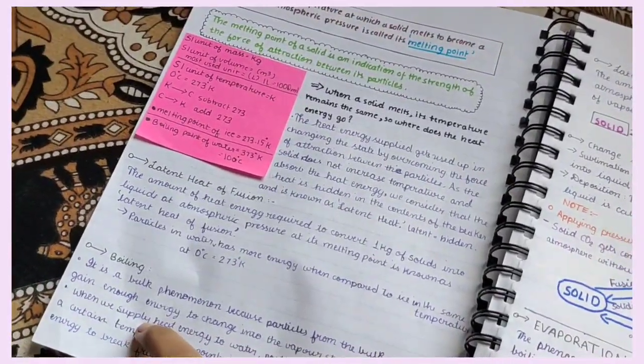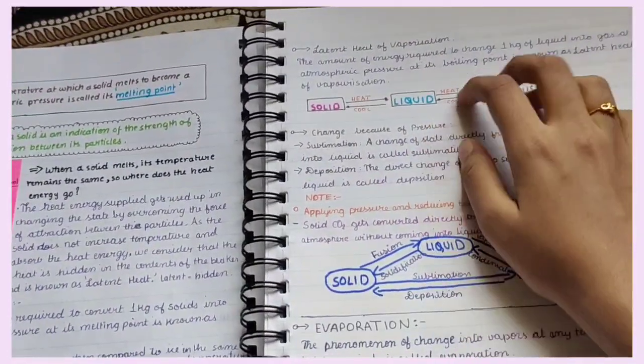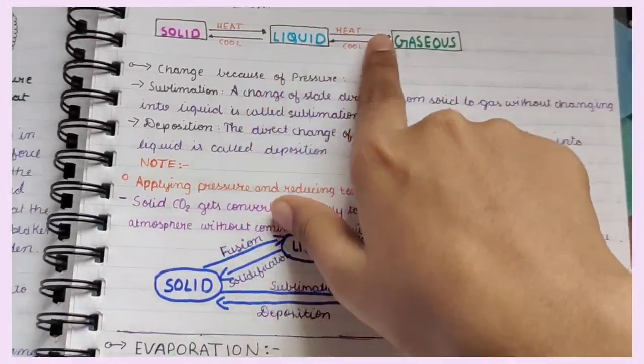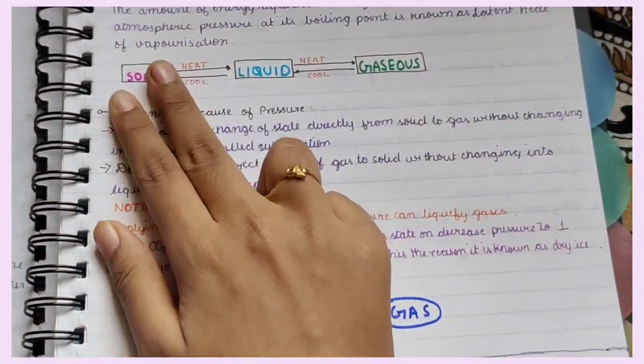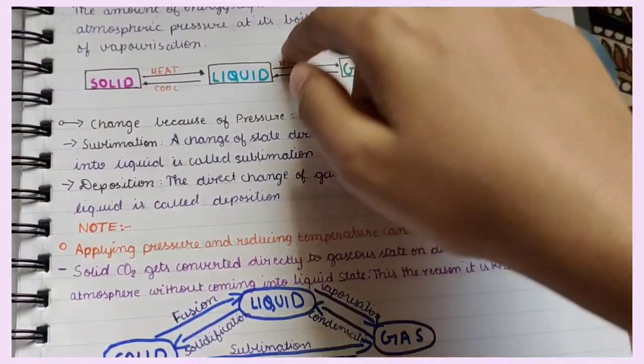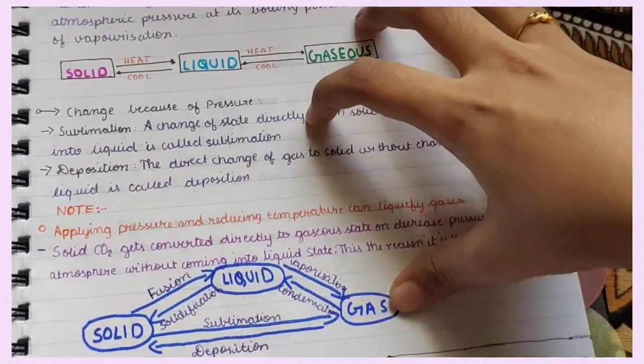So then we have latent heat of fusion, boiling again. I've written all in points. Then latent heat of vaporization. Then this is a small flowchart type of thing about how solids, liquids, gases are converted by temperature.